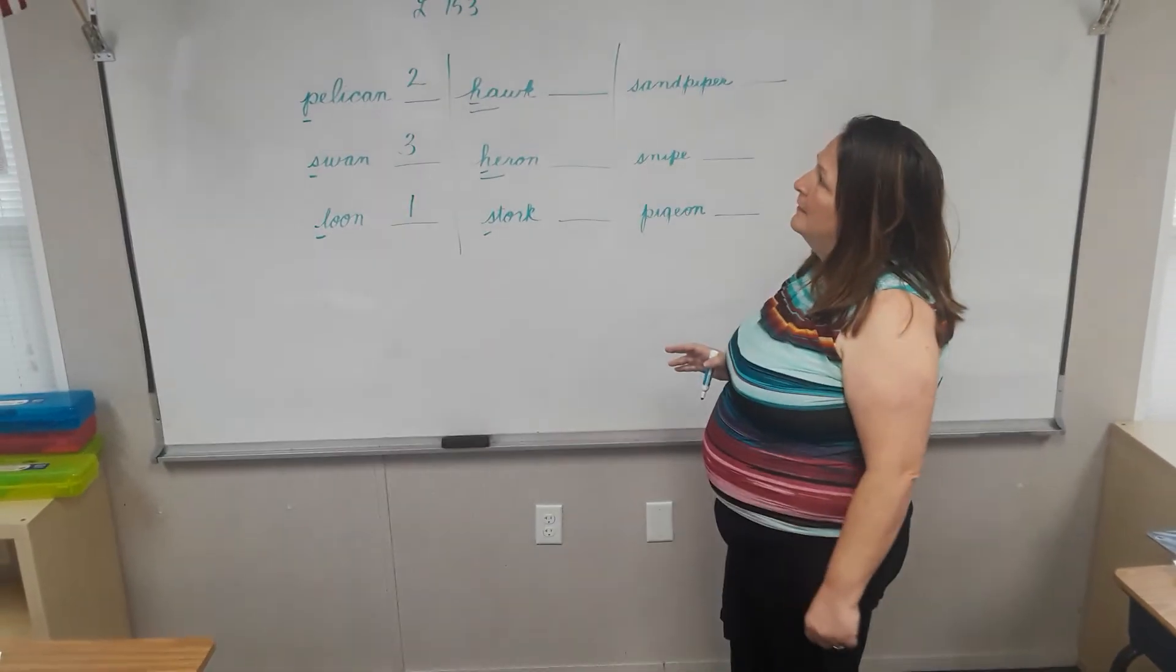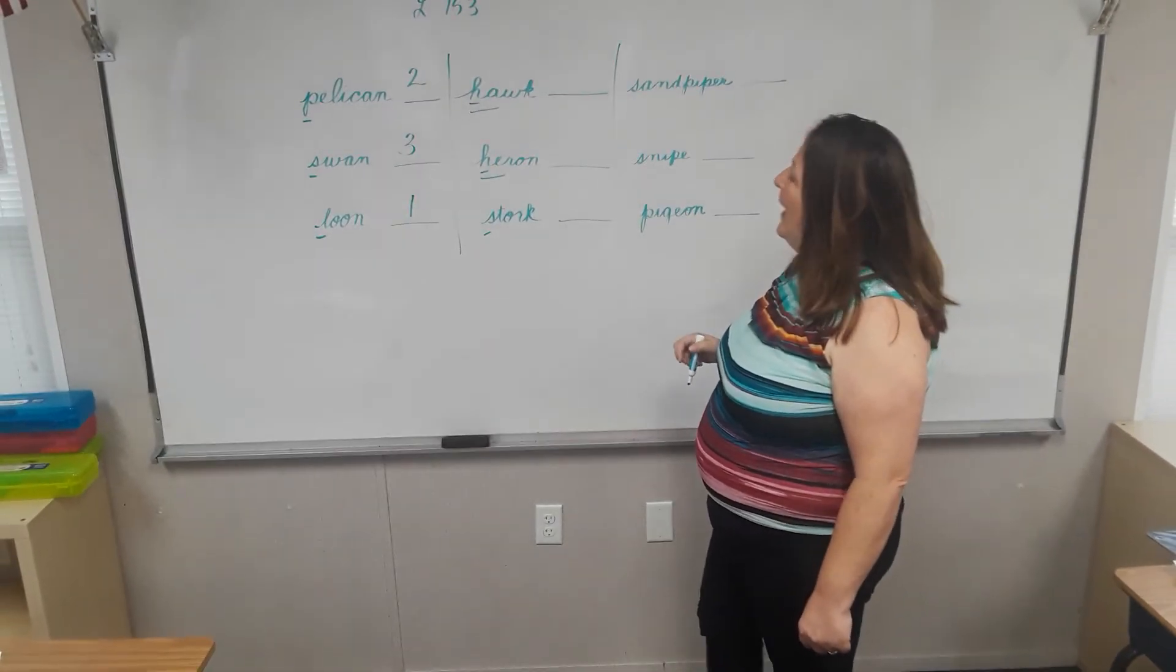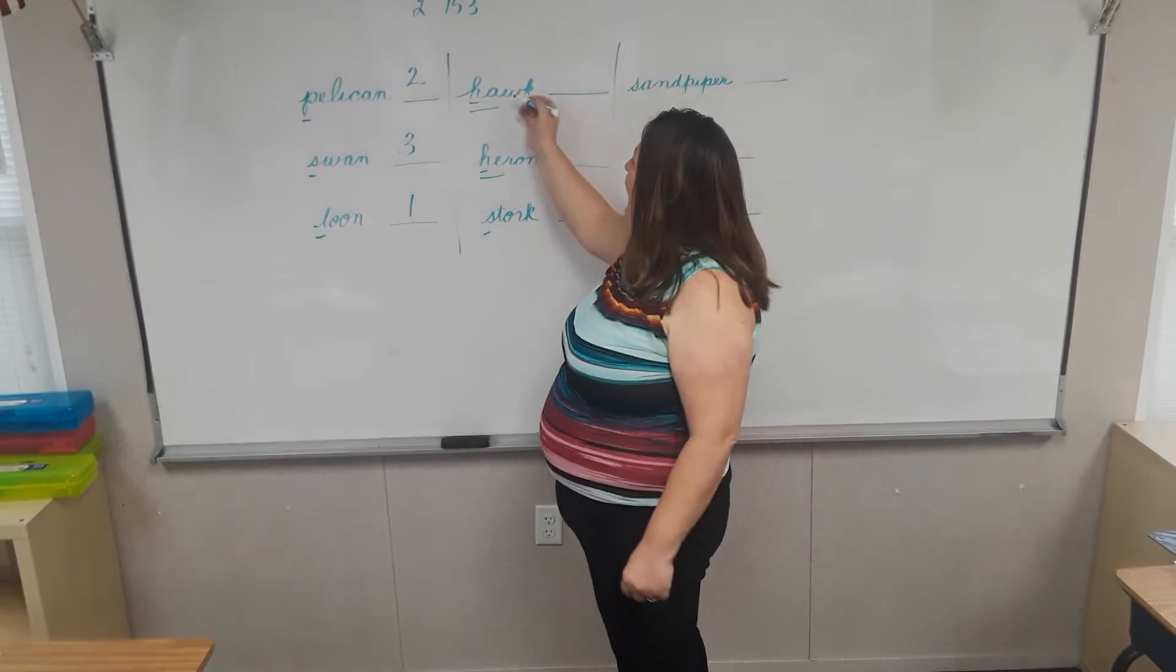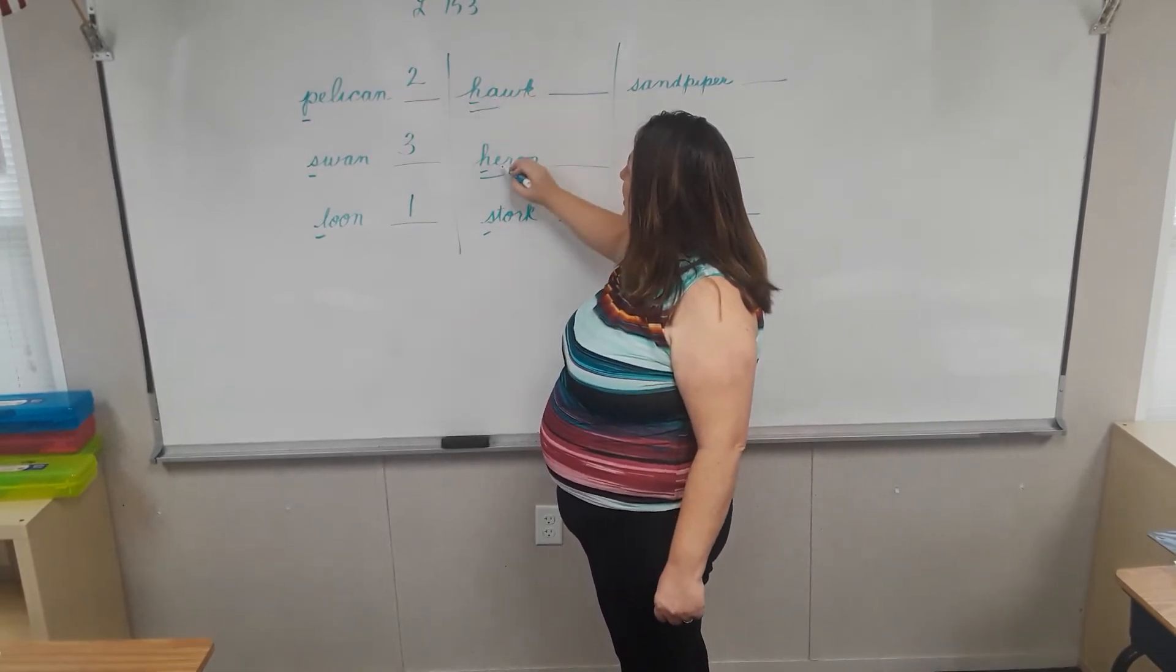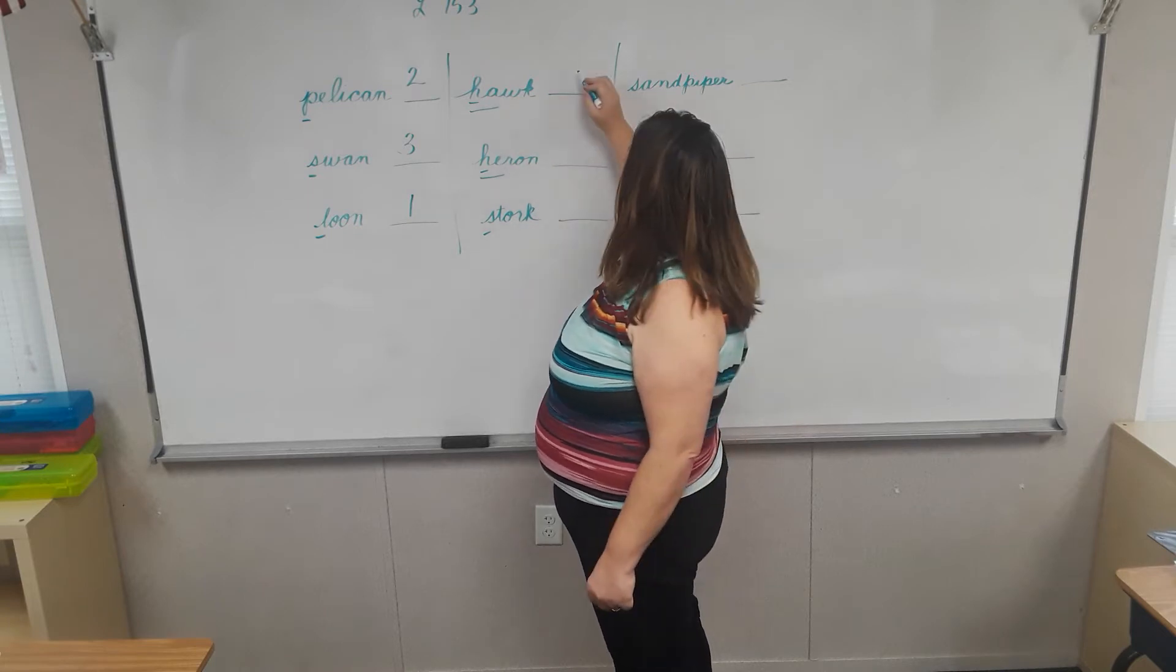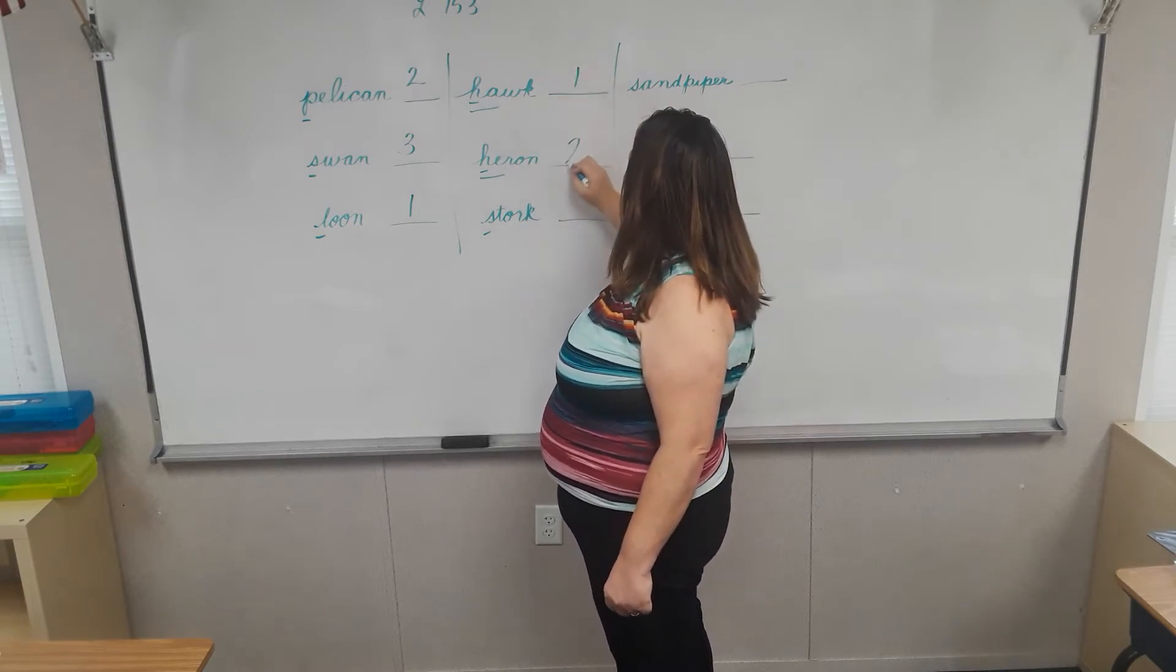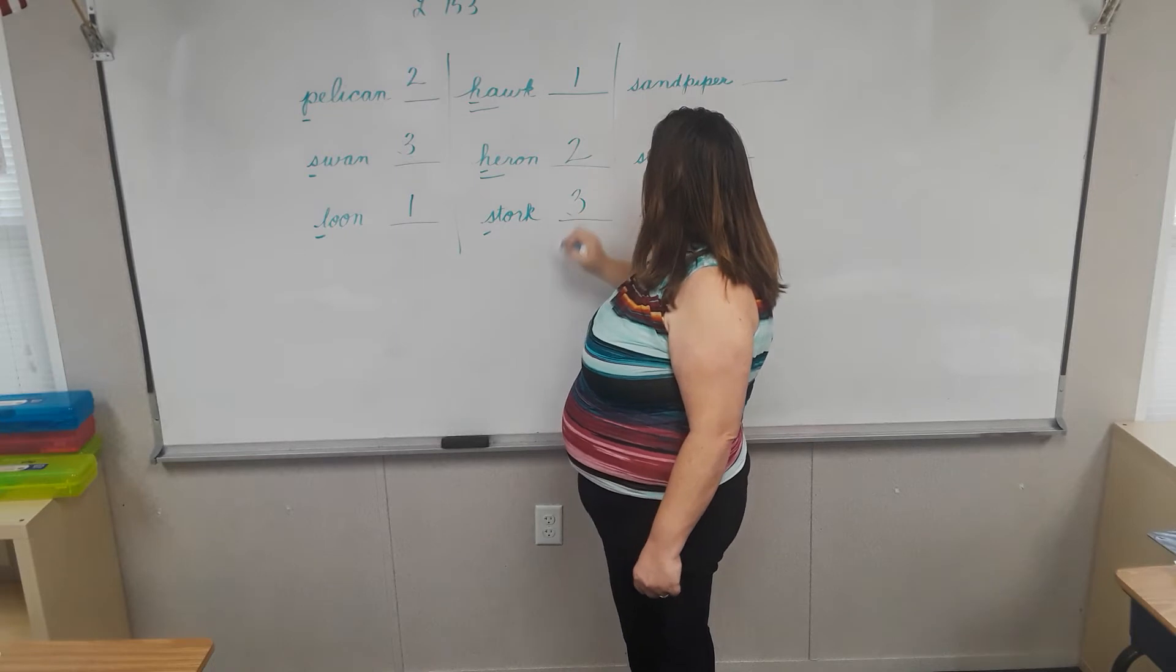Which comes first, H or S? H comes first. Now we have H, A, or H, E. A or E. Which comes first? A comes first. Then E. Then S.